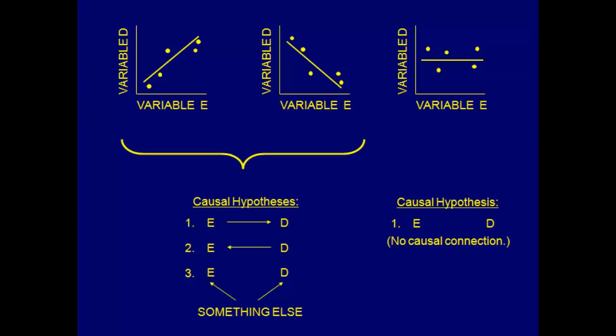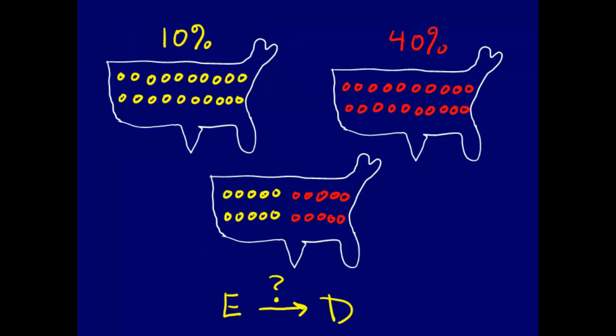Variable A is now going to become E for exposure, and variable B is going to become D for disease. Down here in the causal hypotheses we've also changed A and B to E and D. This came from our video called 'What is a Cause?' and let's say that the outcome here is the binary outcome I'm planning to model, which is chronic obstructive pulmonary disease — COPD.